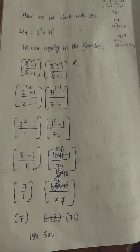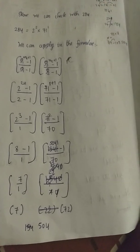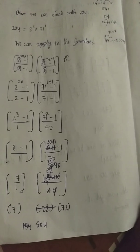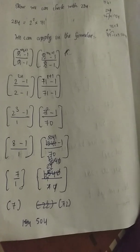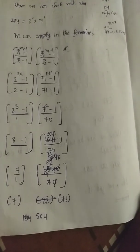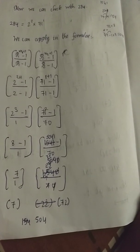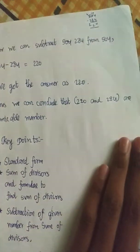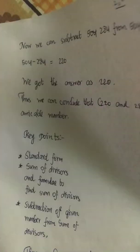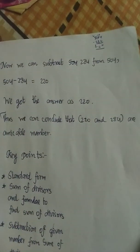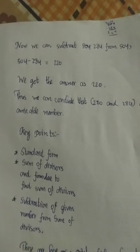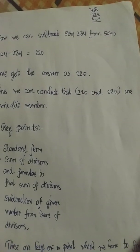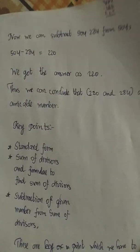This gives 7 into (5041 - 1)/70, which equals 7 into 5040/70, equal to 7 into 72, equal to 504. Now we separate 284 from 504: 504 minus 284 equals 220. Thus we can conclude that 220 and 284 are amicable numbers.